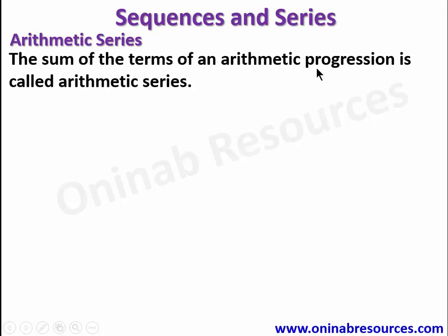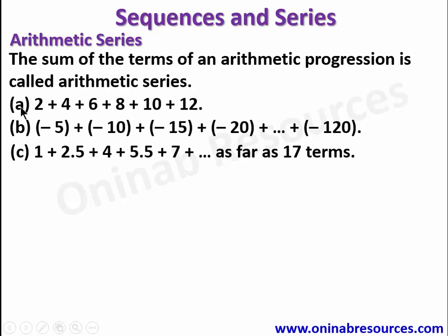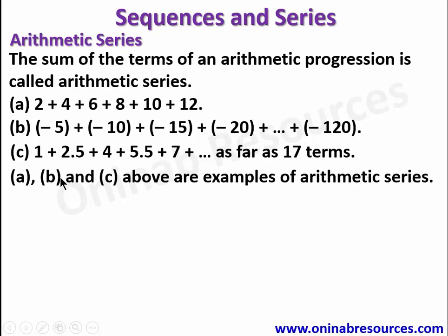The sum of the terms of an arithmetic progression is called arithmetic series. So we have A, B, C, where A, B, and C above are examples of arithmetic series. They are arithmetic progressions because the common difference here is plus 2, here is negative 5, and here is 1.5. So these are arithmetic series.